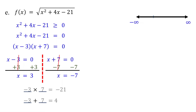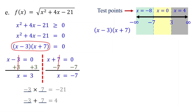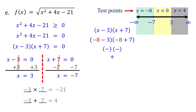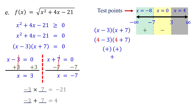Draw a number line and plot the solutions x equals negative 7 and x equals 3, dividing the line into three intervals: less than negative 7, between negative 7 and 3, and greater than 3. Choose test points negative 8, 0, and 4. Substituting into the factored form: for negative 8, both factors are negative so the product is positive; for 0, the product is negative; for 4, the product is positive. So the quadratic expression is positive in the first and third intervals, and negative in the second.